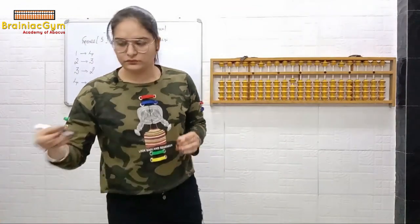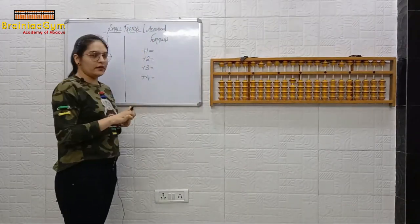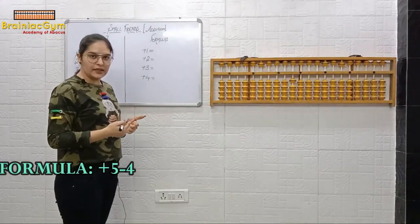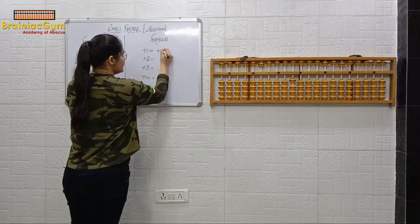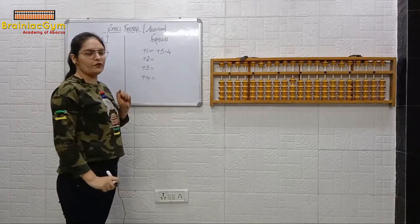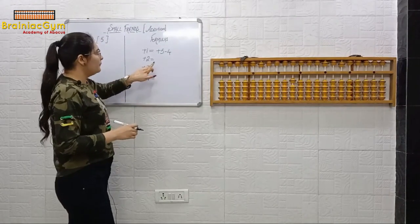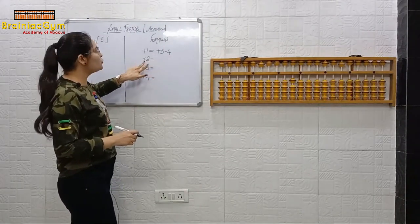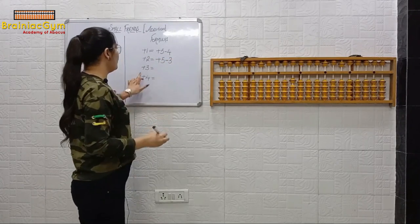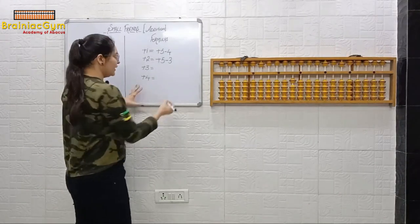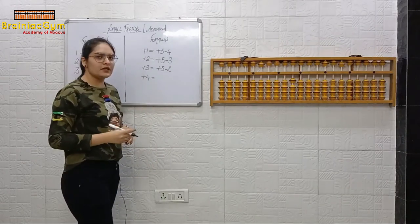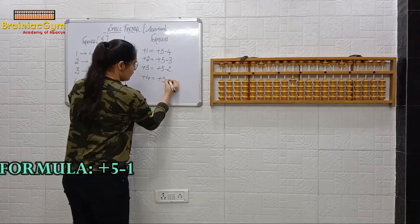Now let's write down the formulas. Formula for plus one: total small friends five, and friend of one is four, so formula is plus five minus four. Formula for plus two: total small friends five and friend of two is three, so formula is plus five minus three. Formula for plus three: friend of three is two, so minus two — formula is plus five minus two. Formula for plus four: friend of four is one, so formula is plus five minus one.